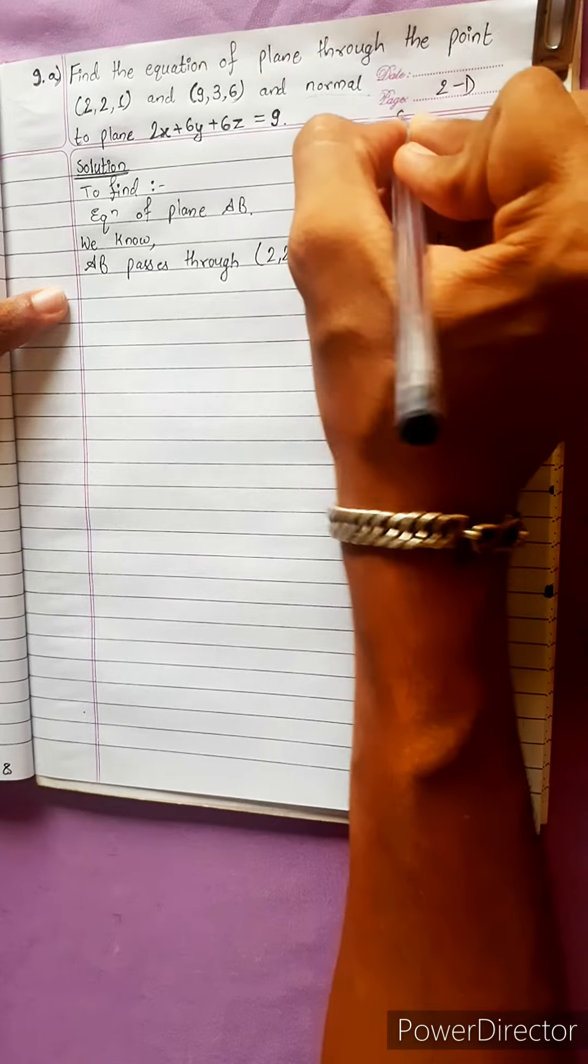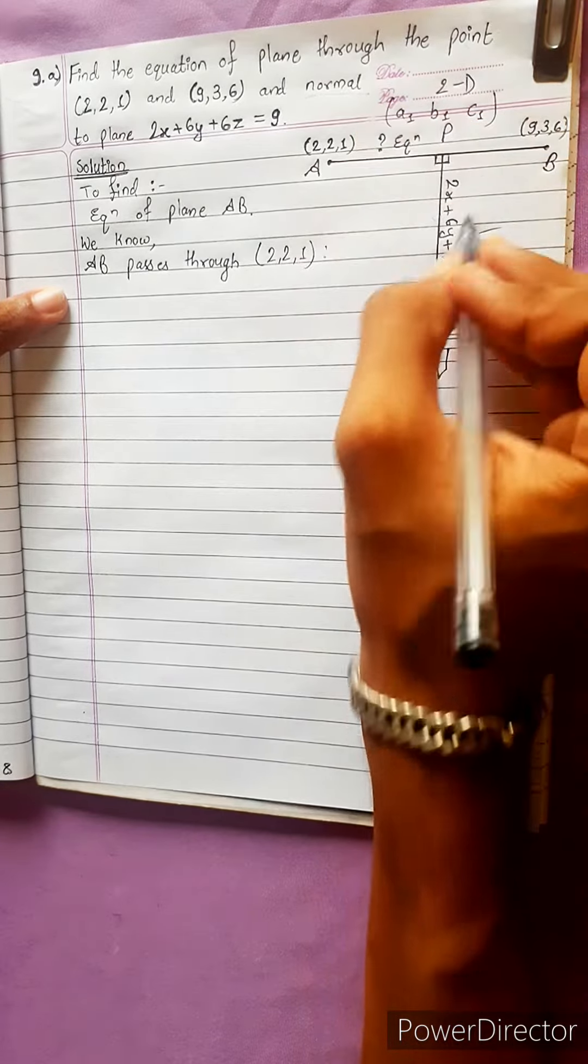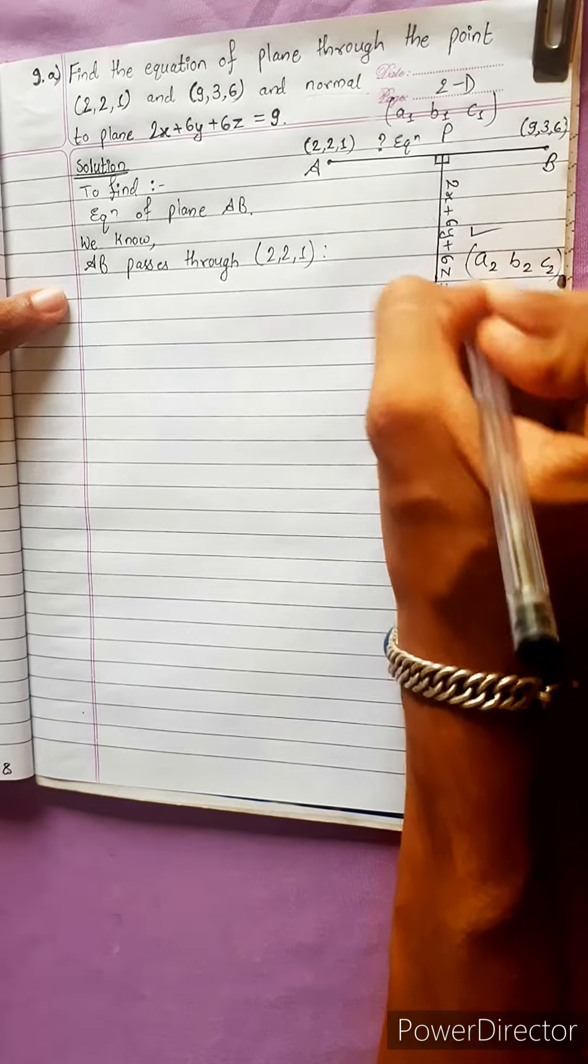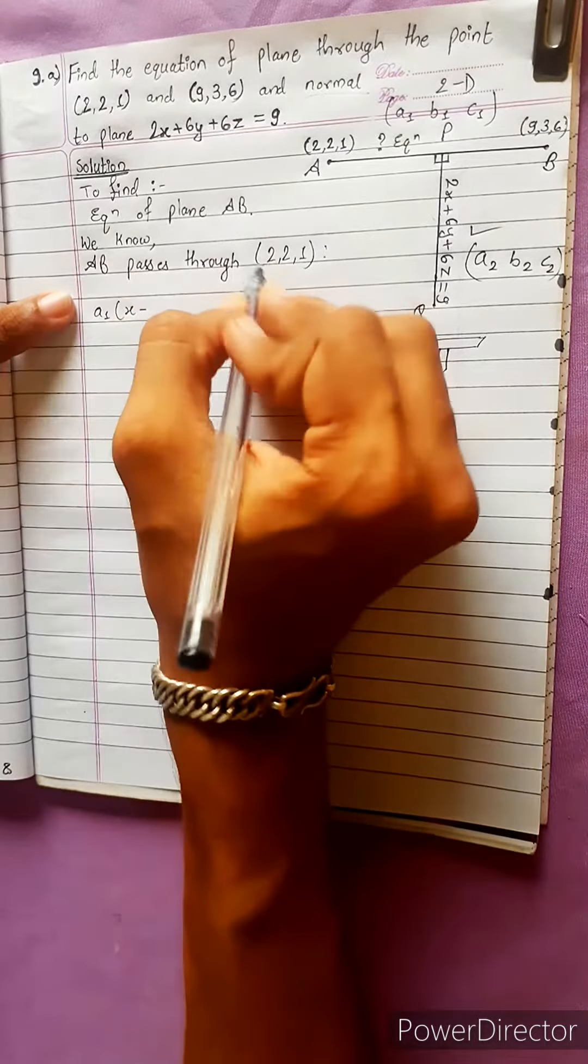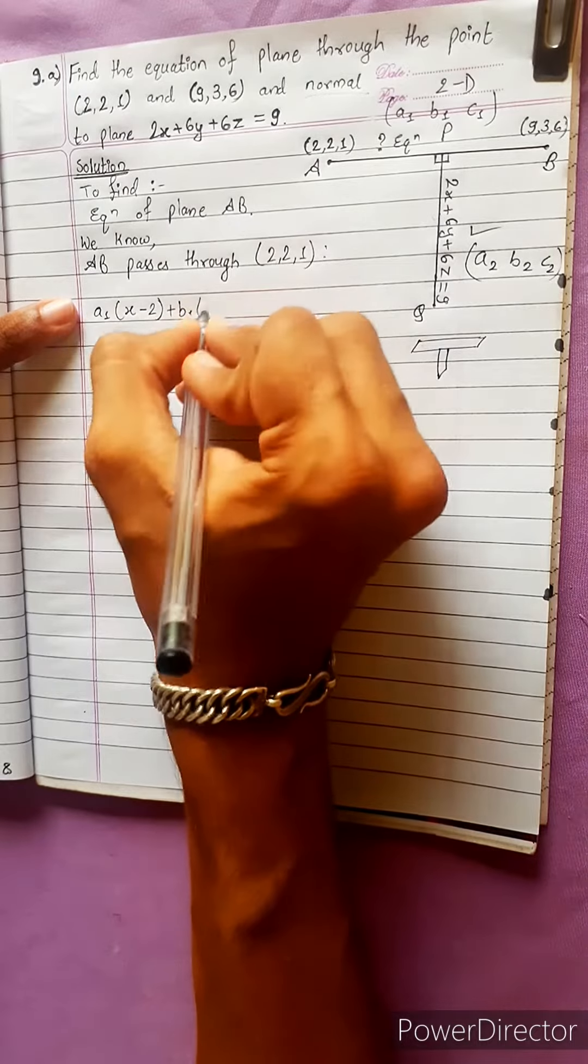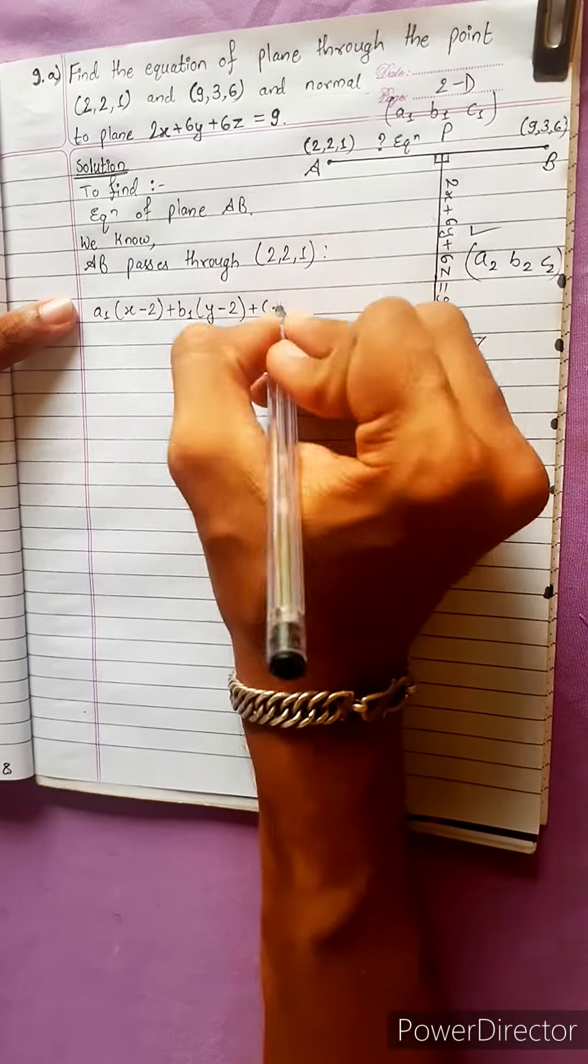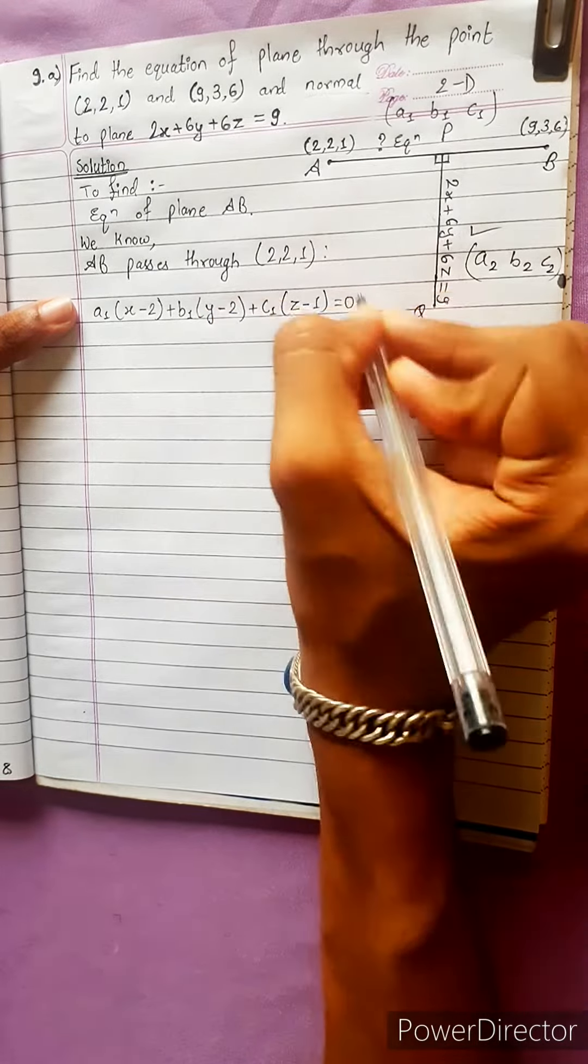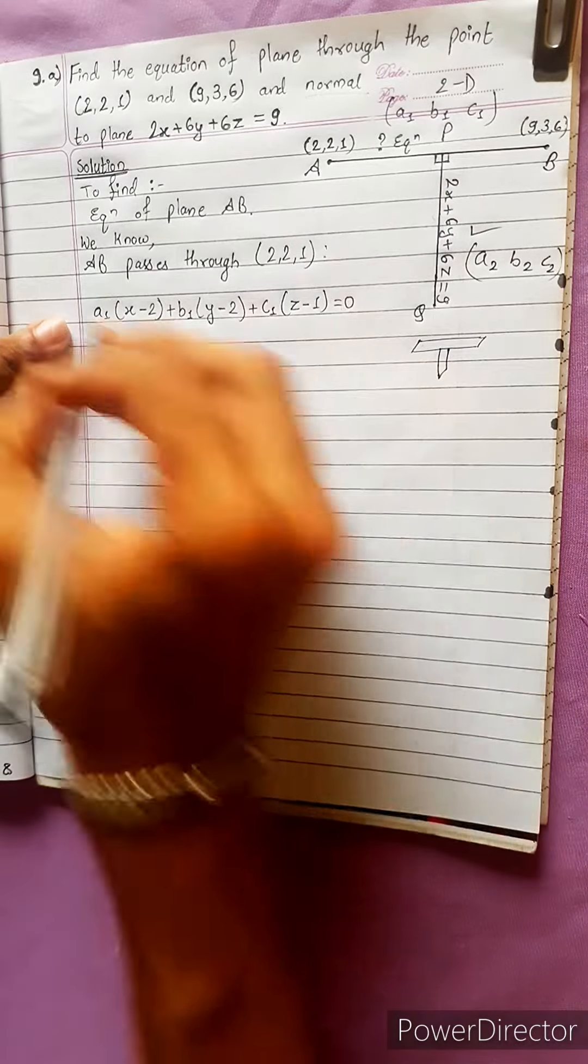Using direction ratios a1, b1, and c1. We will find a2, b2, and c2. This is the formula: a1(x - x1) + b1(y - y1) + c1(z - z1) = 0. This is the equation. We will put values in this. Also, AB passes through the point.